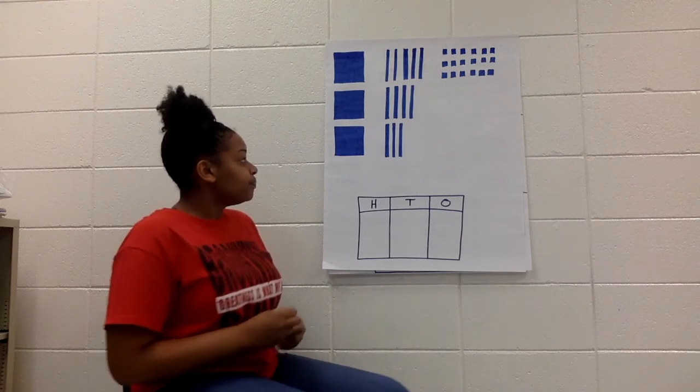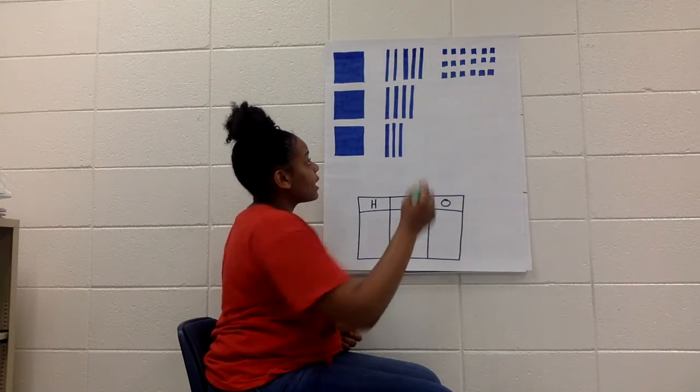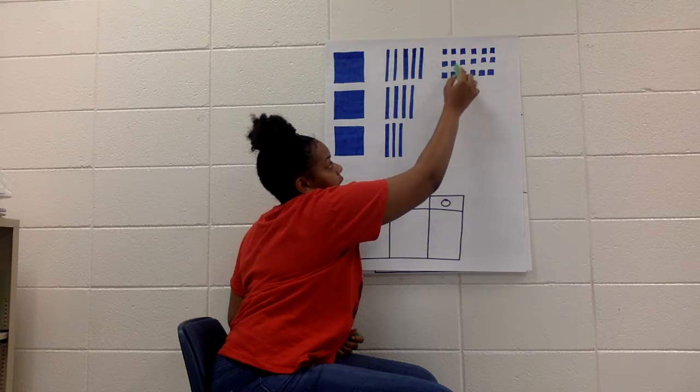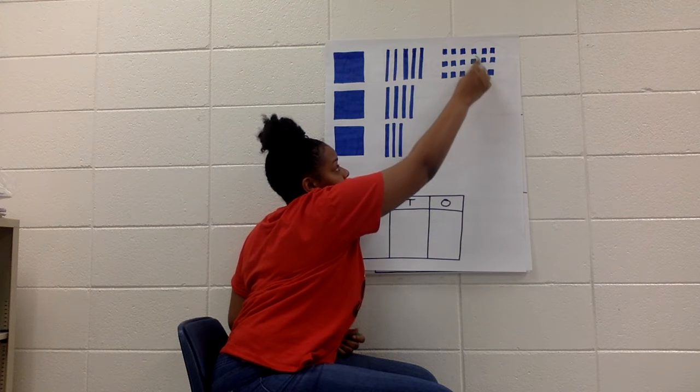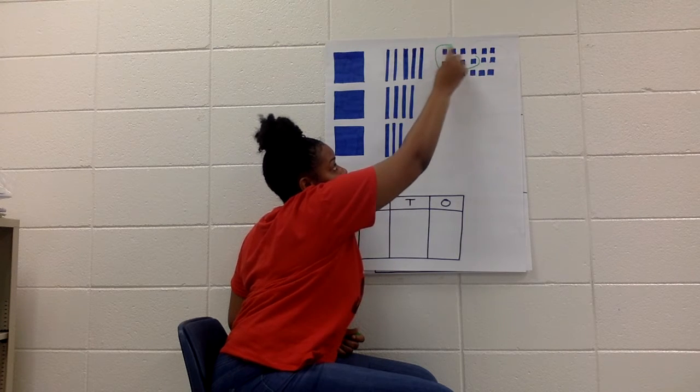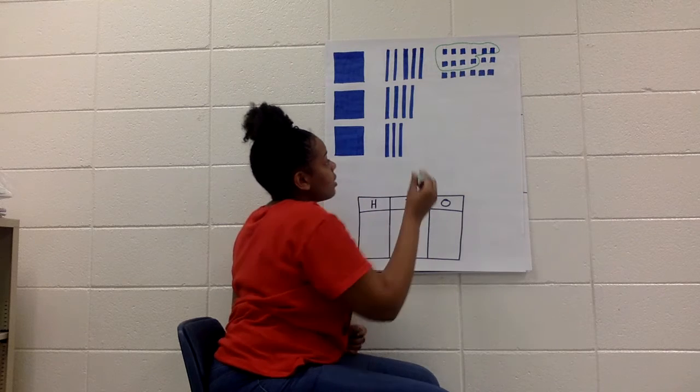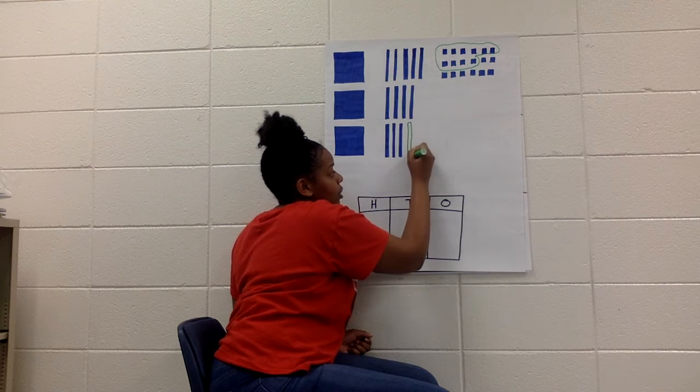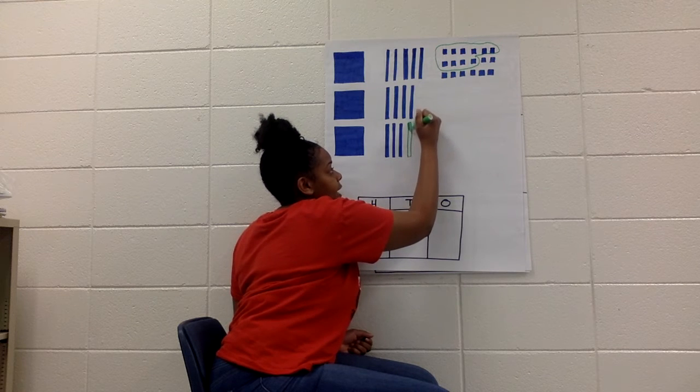So let's try it. I come up here and I count. 1, 2, 3, 4, 5, 6, 7, 8, 9, 10. Stop. Regroup. So I circle my 10. And I'm going to draw another 10. So I stop, regroup, add a 10.